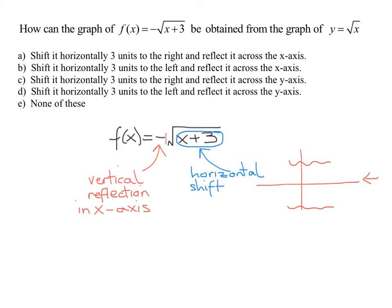But remember, when you shift horizontally, it always kind of does the opposite of what you think. So plus 3 is going to shift it 3 to the left. The plus 3 kind of makes you want to make it go right, but in fact it's going to go to the left 3.